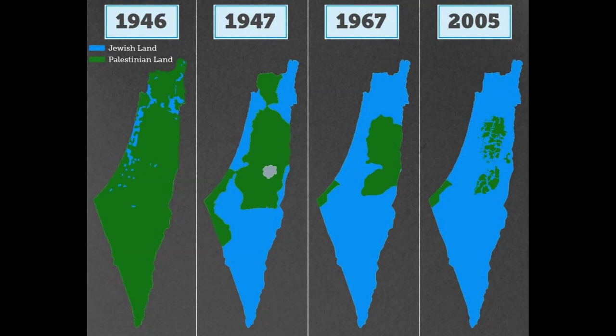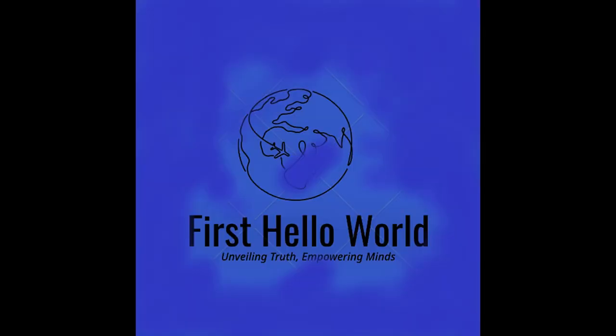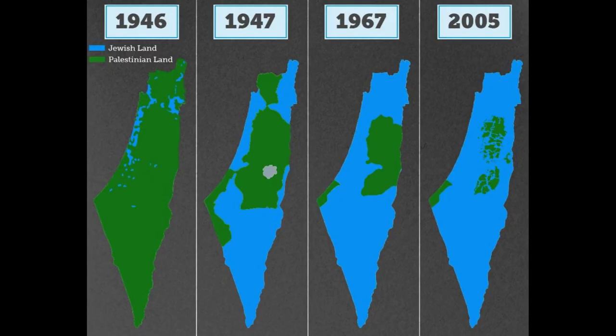In 1917, the British government issued the Balfour Declaration, which expressed support for the establishment of a Jewish national home in Palestine. This declaration was made without the consultation or consent of the Palestinian people.